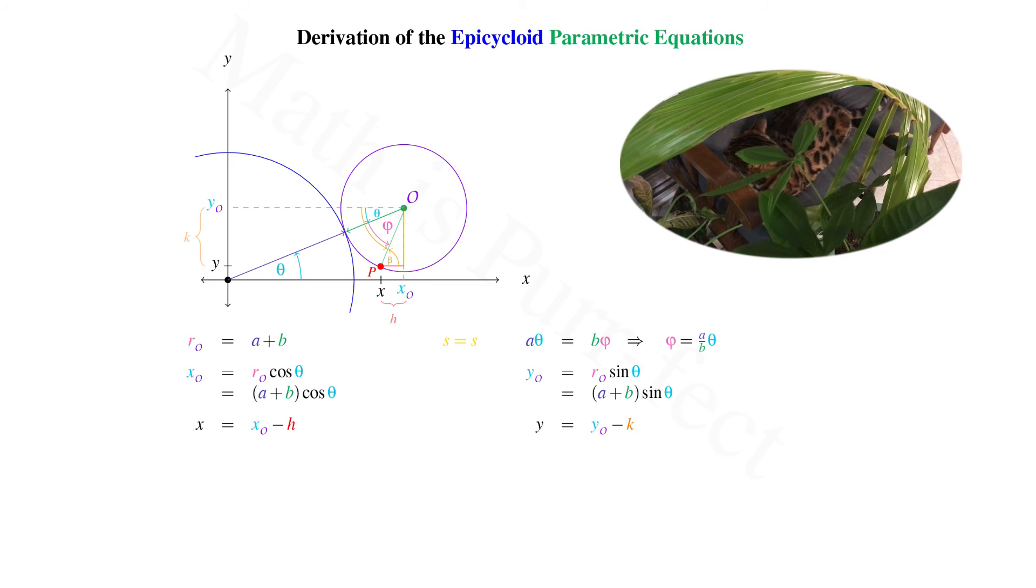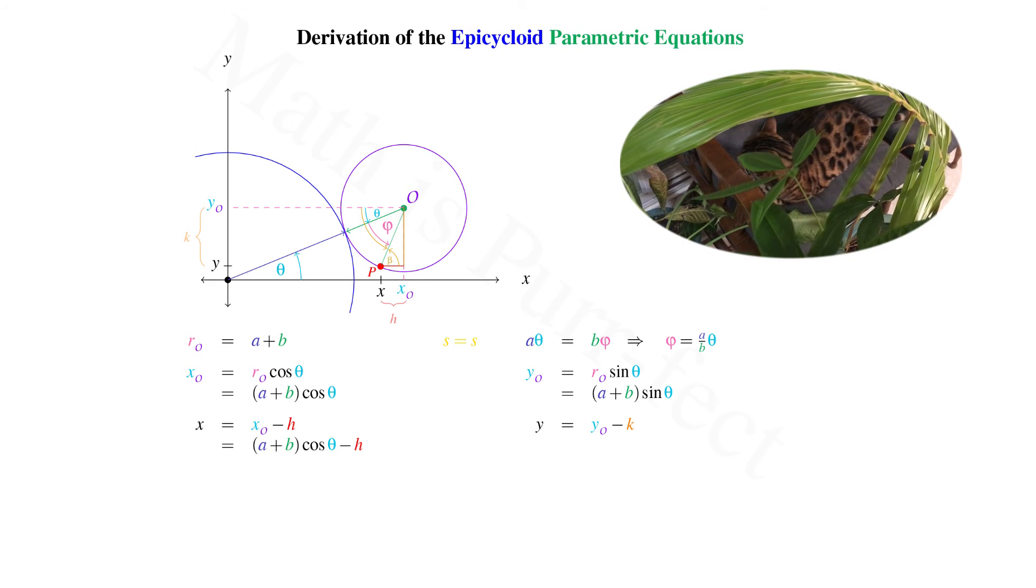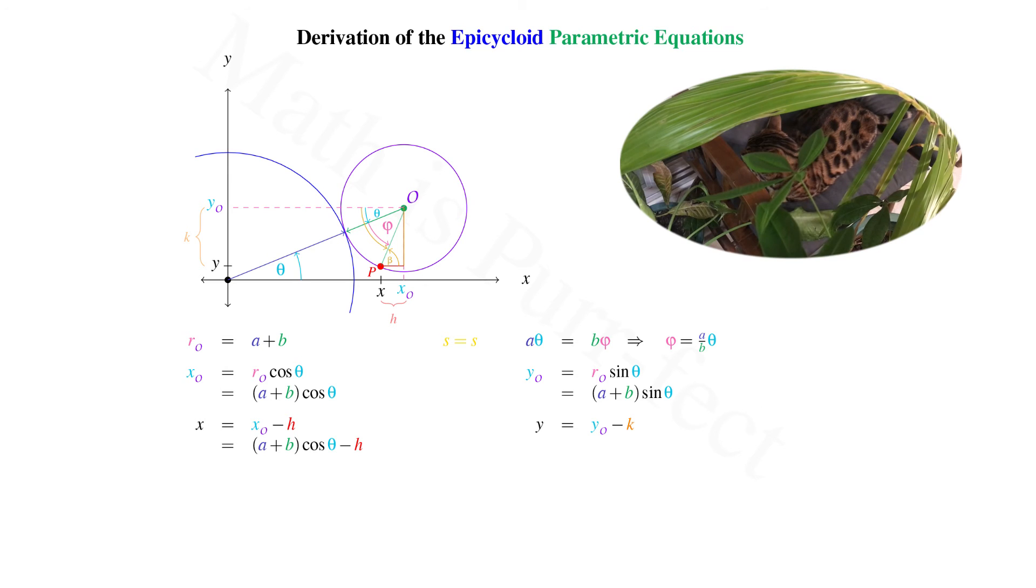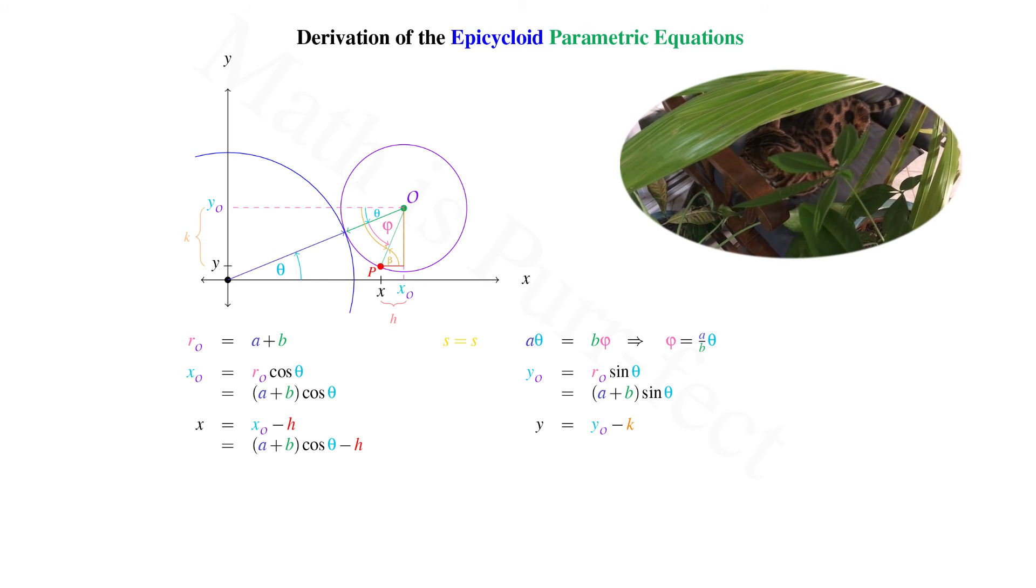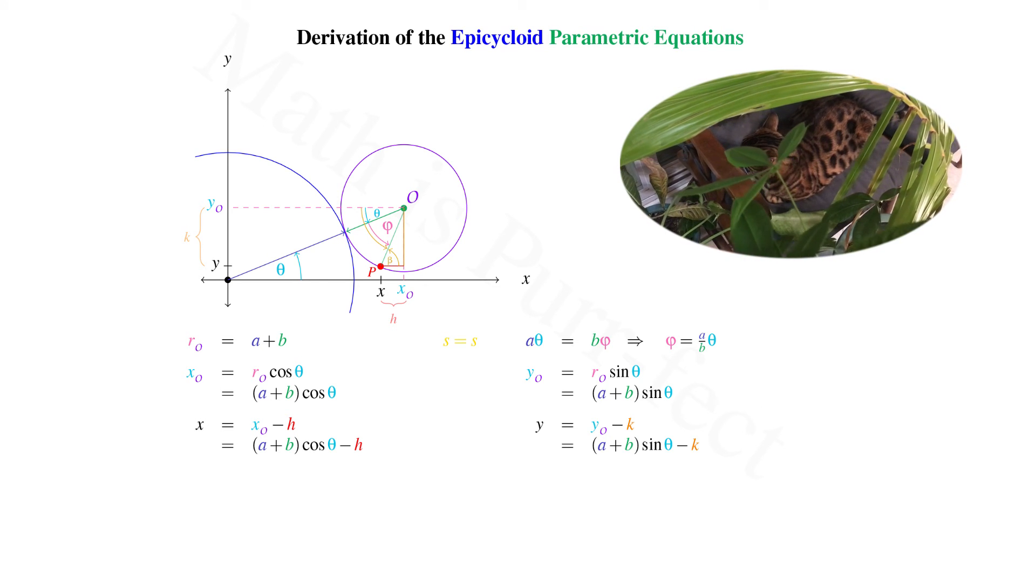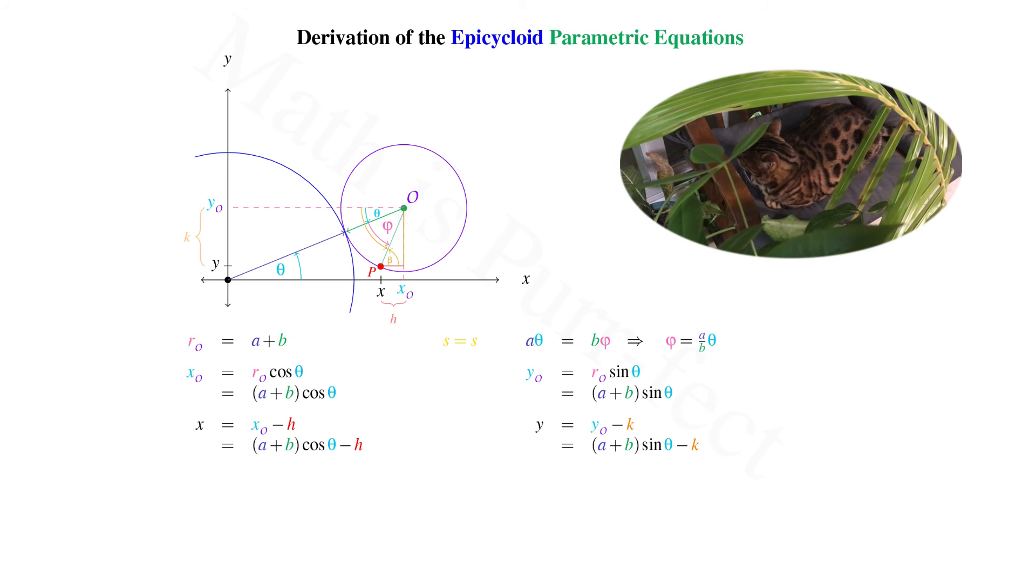Returning to our derivation, we note that X can be written as X sub O, or A plus B cosine theta, minus H. And Y can be written as Y sub O, or A plus B sine theta, minus K.